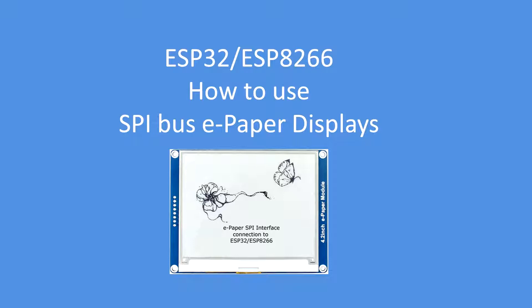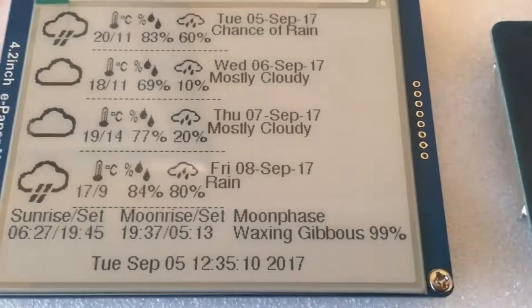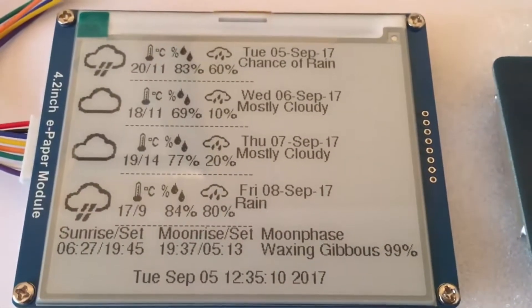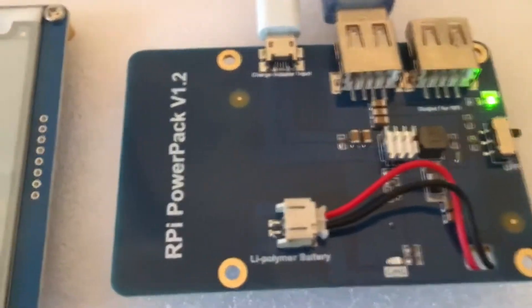Hello folks, this is a short video to show you how to use SPI-based e-paper or e-ink displays. In this instance I'm using the Waveshare 4.2-inch and the 2.13-inch variants — that's 400 by 300 or 250 by 122 pixels. Here's a quick demonstration: note the time on the display, 12:35, 10 seconds.